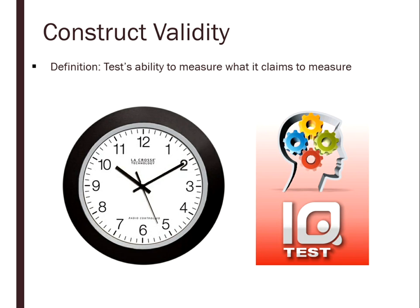Construct validity is the test's ability to measure what it claims to measure — and this is where we really get into trouble. The IQ test is very reliable: you will get the same score pretty much every time you take it. But is it valid? Are we actually measuring intelligence with IQ tests? That's a legitimate debate. Similarly, there's a whole argument in personality theory about whether the Big Five Inventory is actually measuring personality, or something else entirely.